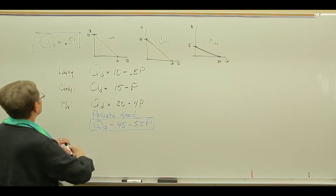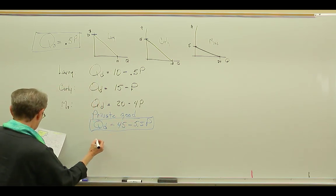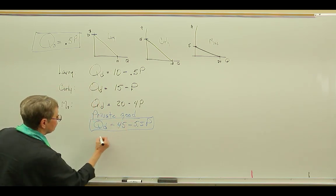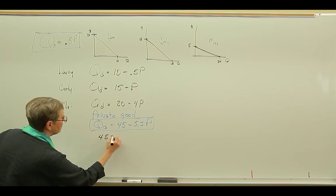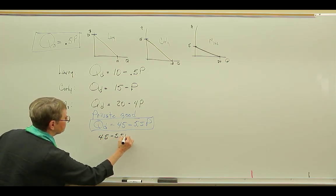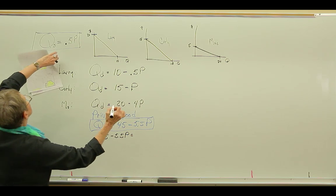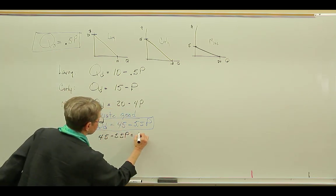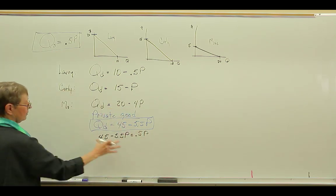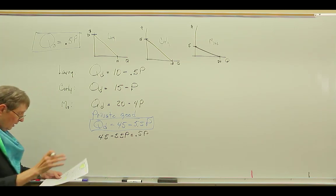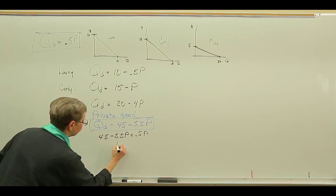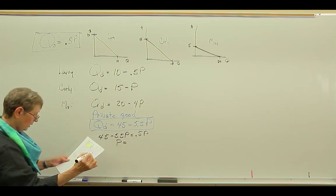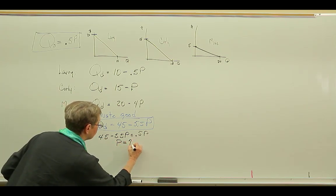So 45 minus 5.5P equals 0.5P. So we have demand equals supply, and when we solve that, we find that the price is 7.5, and the quantity is 3.75.